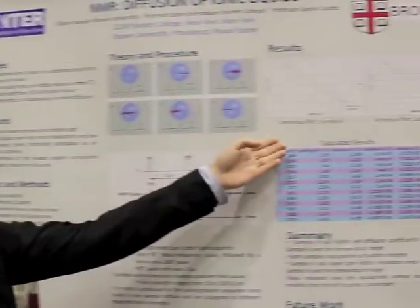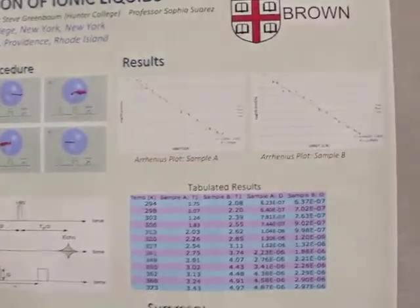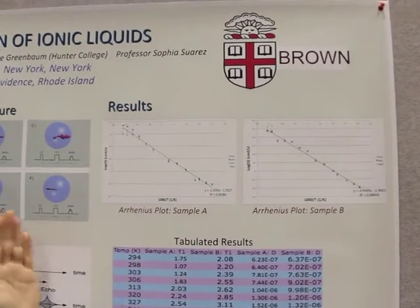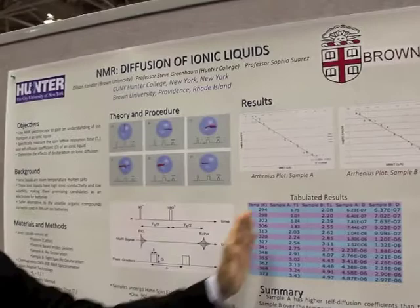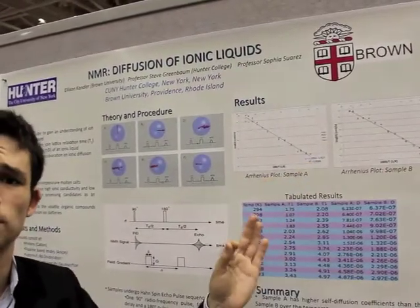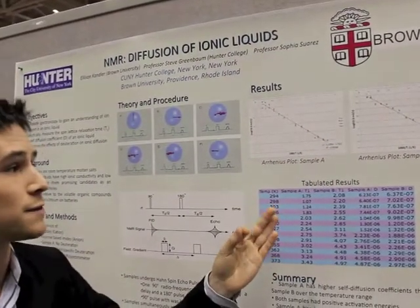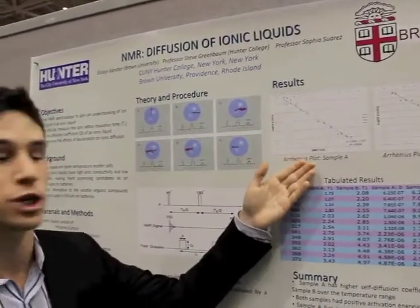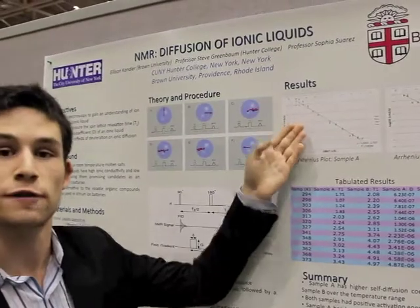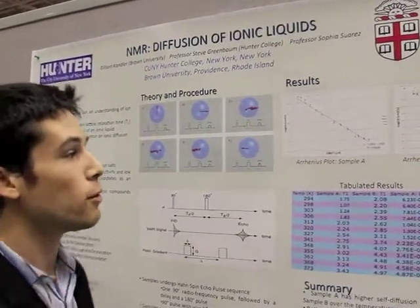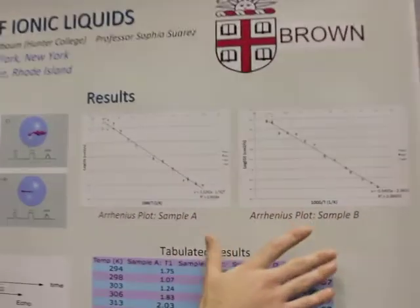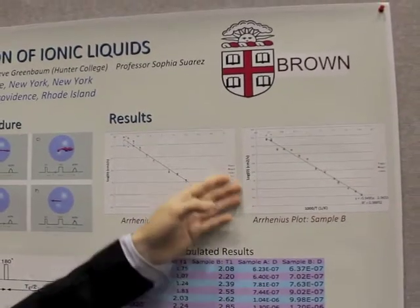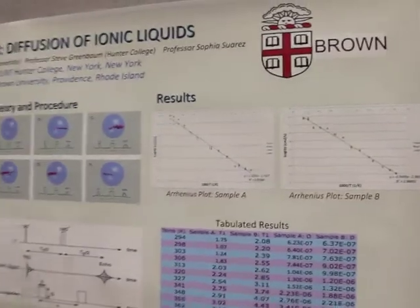If you take a look at the results here, which are plotted on an Arrhenius plot, you can see that we studied two samples. The first sample is a completely protonated sample, while sample B has slight deuterium substitution in the sample. As you can see, there's a positive relationship between the diffusion coefficient and the temperature. Both have positive activation energies.